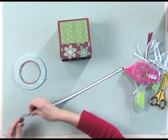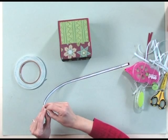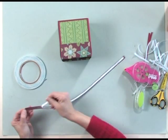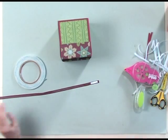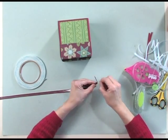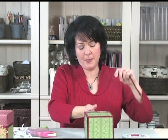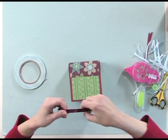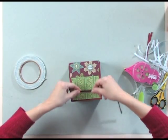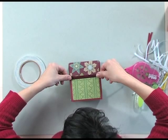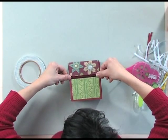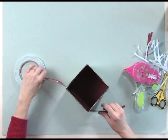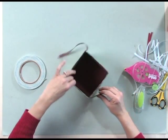Okay. And as you can see, score tape sticks to just about anything. And so you want to lay it. Find the center. You want to lay it right over that edge. And then come around the other side.